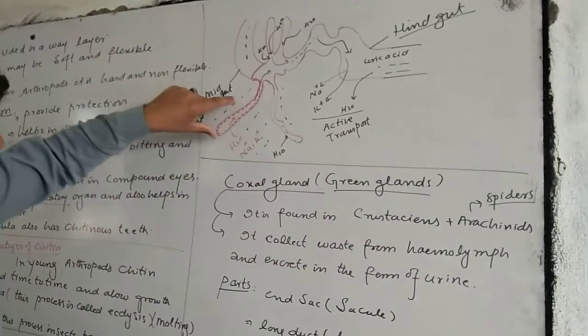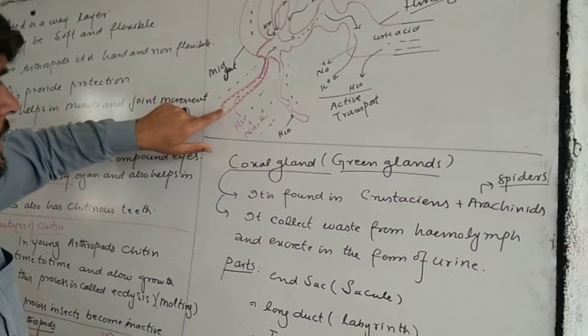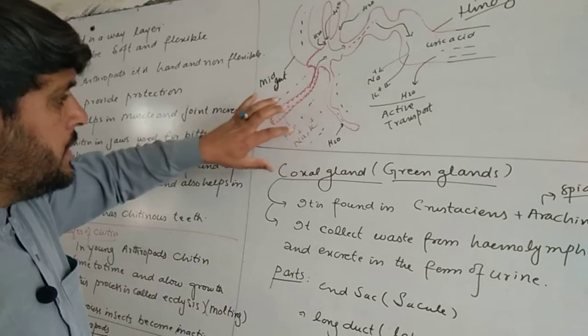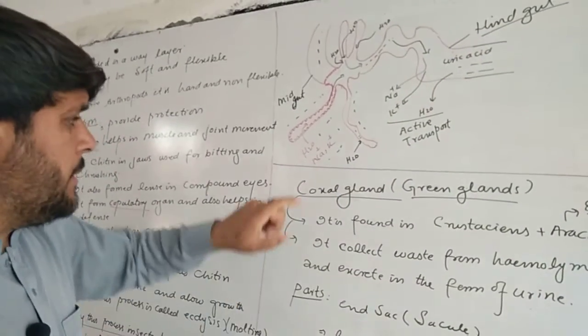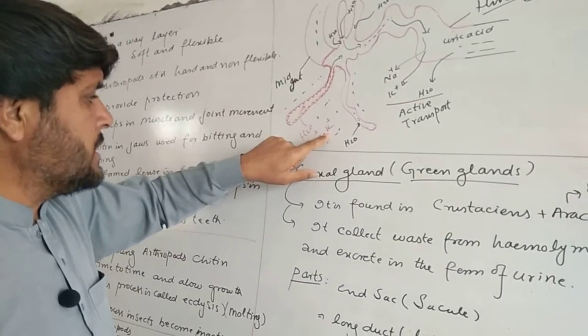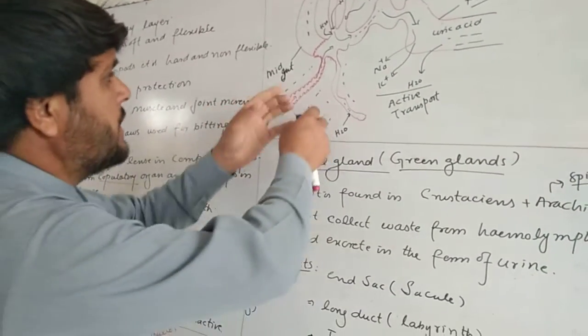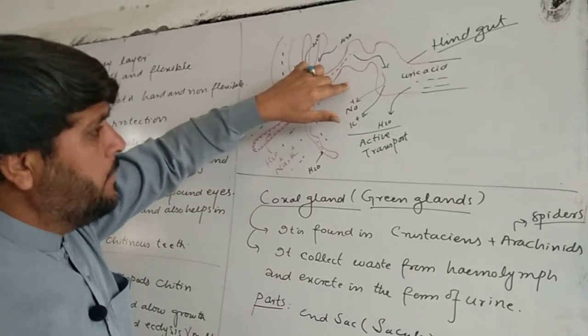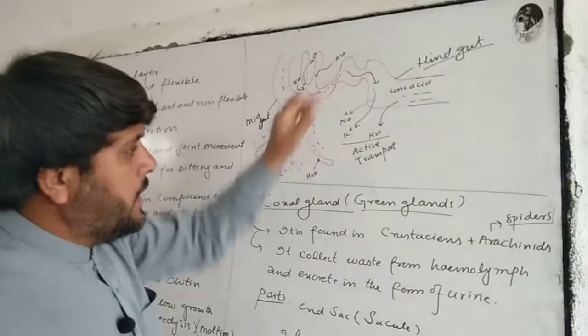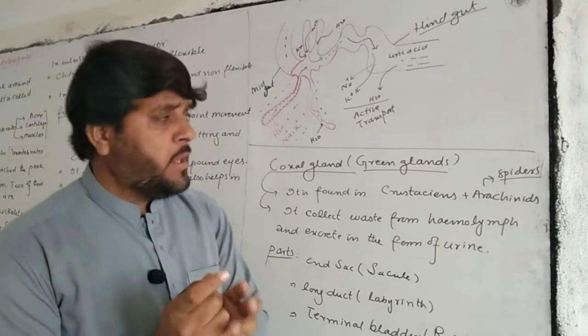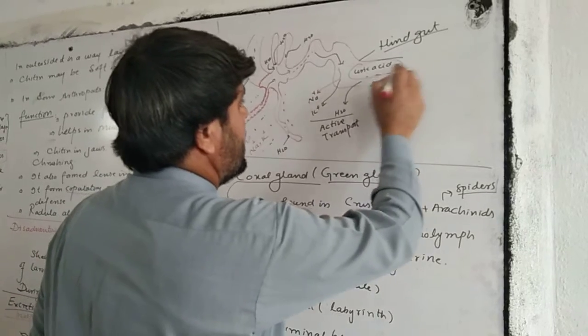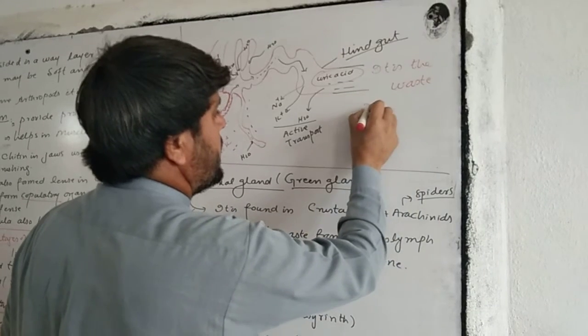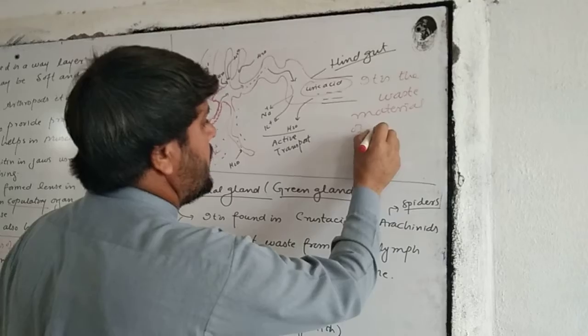The Malpighian tubules are blind sacs with different epithelial cells. By the process of active transport, sodium, potassium ions, waste material, and water are taken in. Different parts intake materials into the main channel where they circulate. In the hindgut, uric acid precipitates. Uric acid is the waste material of insects.